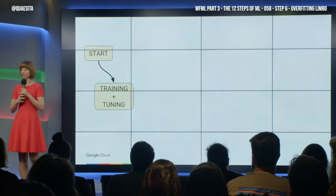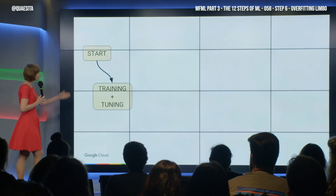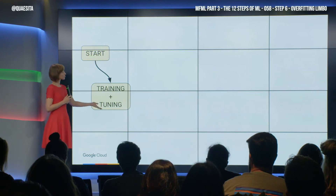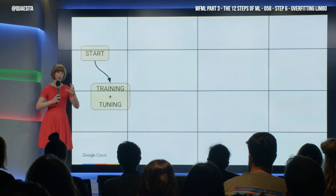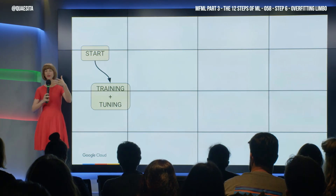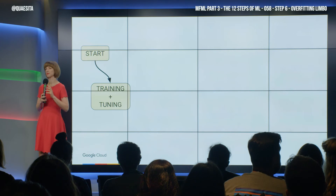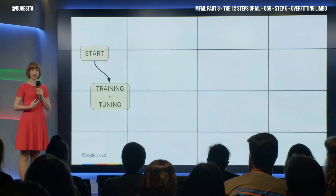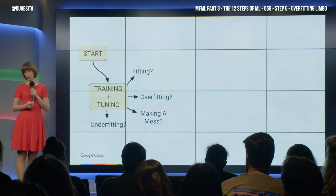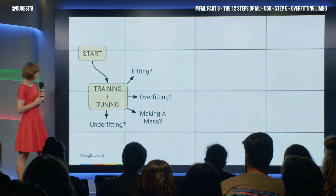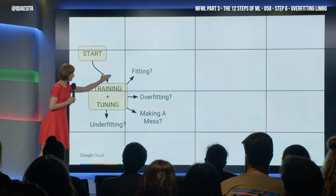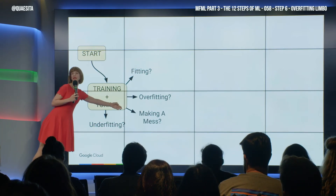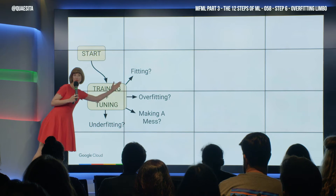Here's a little process preview. We're going to start and we'll do some training and tuning where we're going to figure out a potential recipe. And then, when we've done that, certain things might be true. We might be fitting, we might be overfitting, we might be underfitting, or we might simply be making a mess. These are all options.